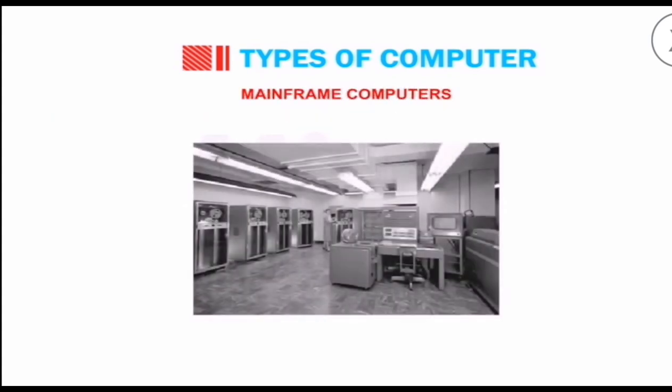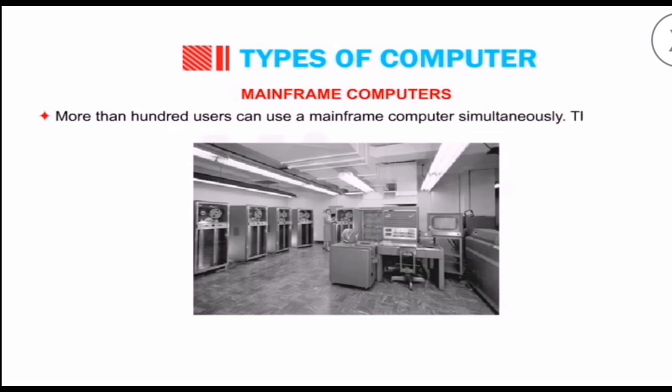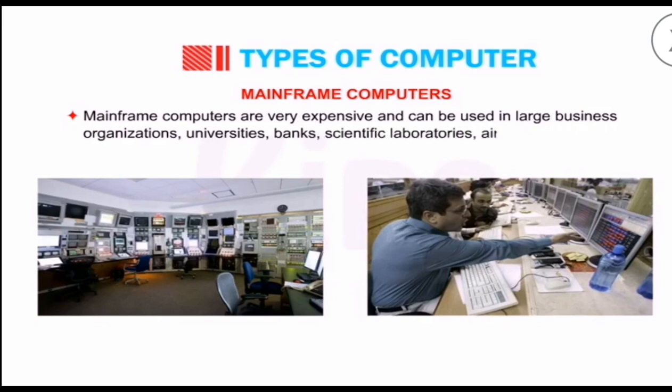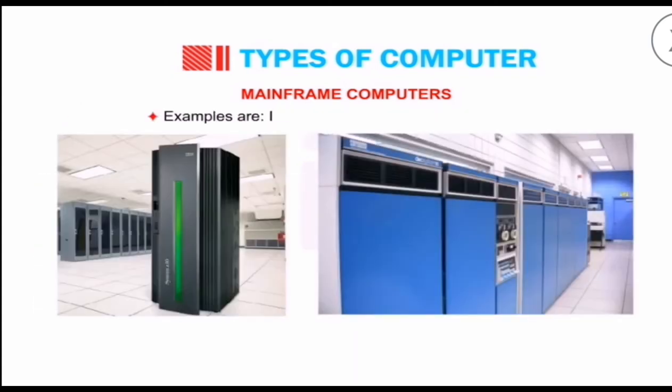Let's go to the third part: mainframe computers. These computers are very powerful, big in size, with large memory and high speed. They are designed to tackle huge amounts of data. Many users, more than 100 users, can use mainframe computers at the same time. Mainframe computers are very expensive and used in large business organizations, universities, banks, laboratories, airways, and ticket reservation. Examples are IBM Z series and PDA 10 System Z10.